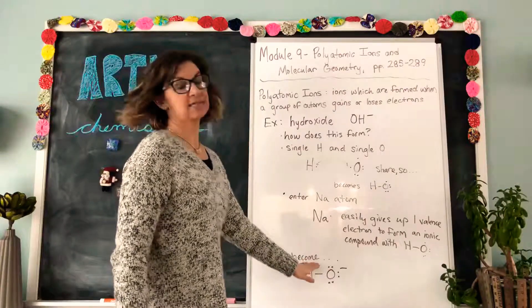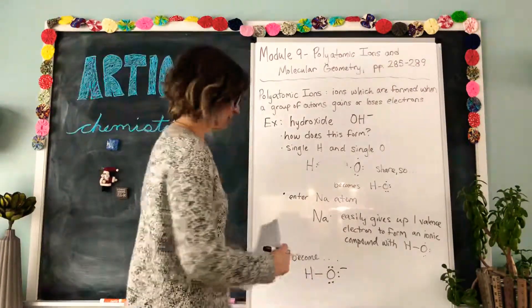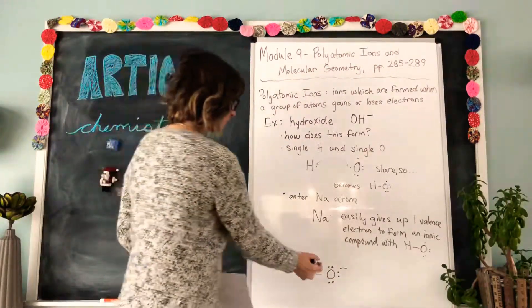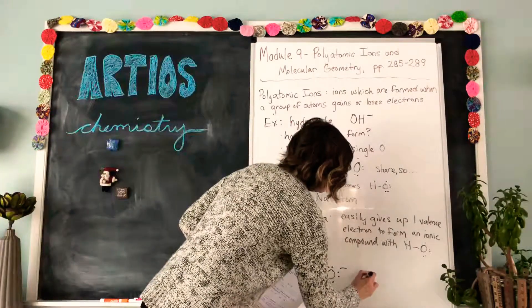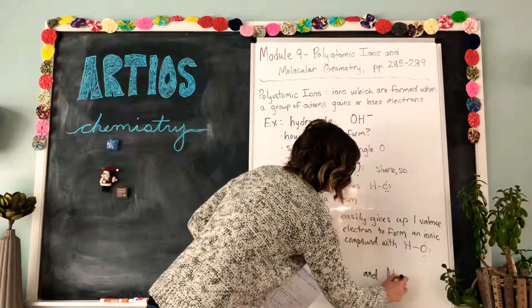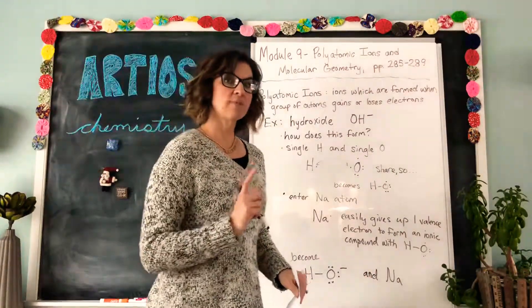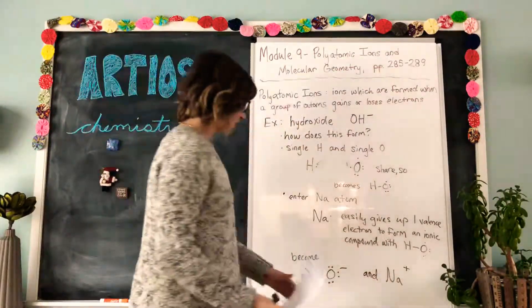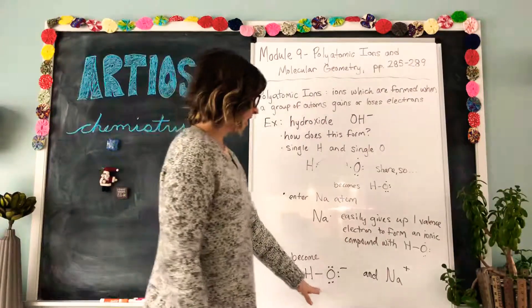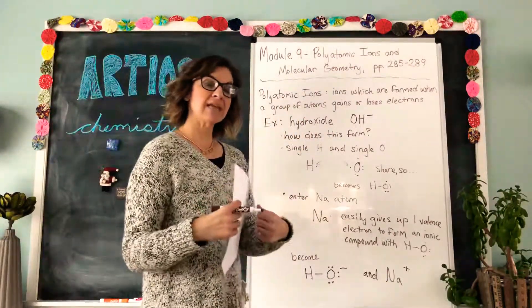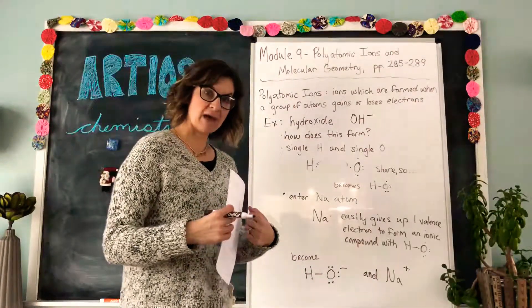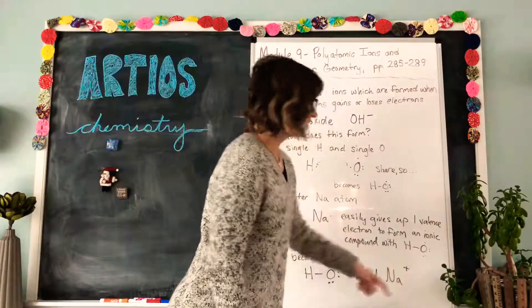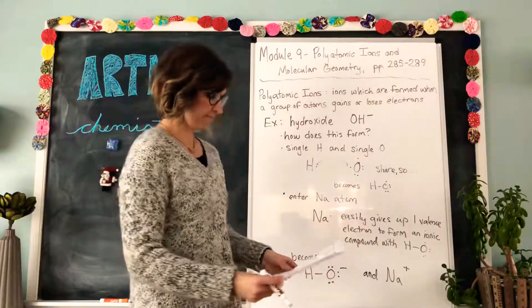I probably shouldn't put the dot dot dot after become because those look like little floating electrons, don't they? So I'm going to erase those. So that's where we get the hydroxide ion. And since the sodium has given up its electron, it now has one more proton than it has electrons, so it has a positive charge. So we have the hydroxide ion and the sodium ion, and of course they're bonded together by an ionic bond because the negative force of hydroxide is attracted to the positive force of the sodium ion.